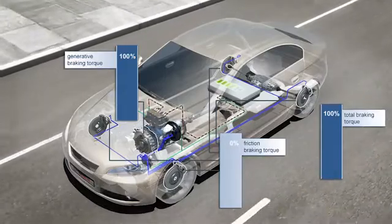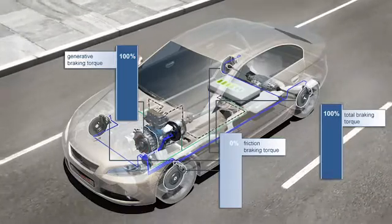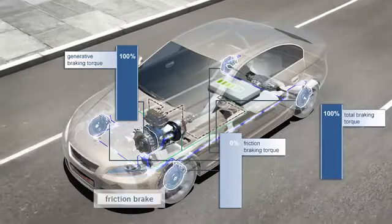At low speeds, for example, shortly before the vehicle comes to a stop, the electric motor can no longer supply sufficient generative braking torque and the friction brake must be activated.